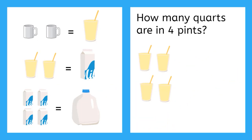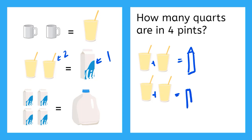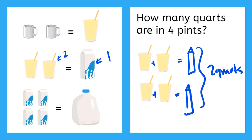Now this one says: how many quarts are in four pints? One quart is equal to two pints. So these two pints is going to be equal to one quart, and these two pints is going to be equal to one quart. That gives me a total of two quarts equal to four pints.